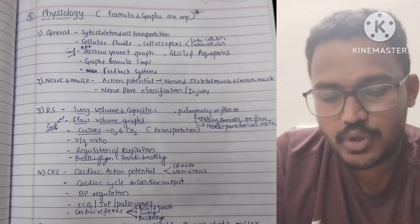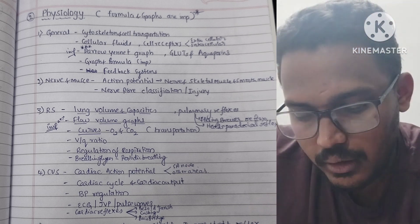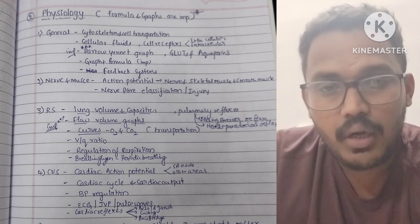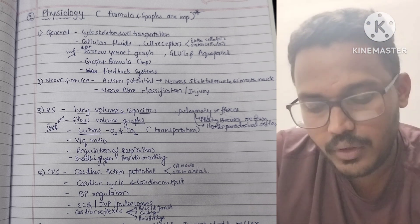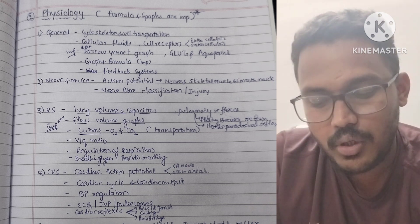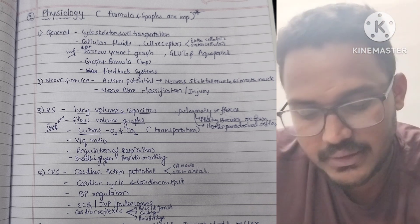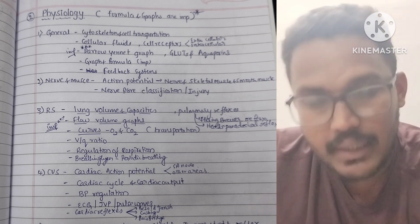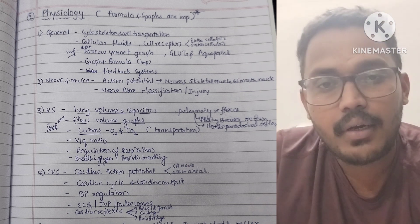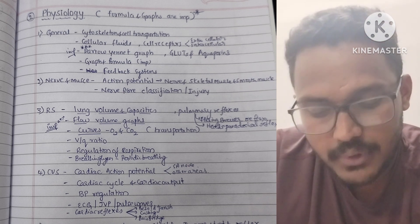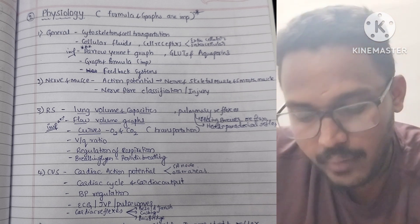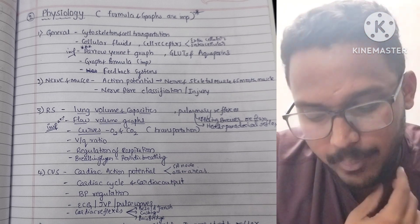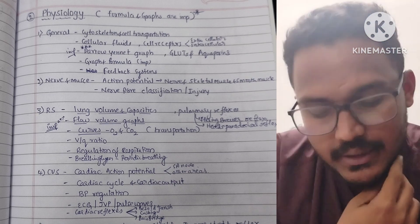Coming to physiology — in physiology, formulas and graphs are more important. From general physiology: cytoskeleton, transportation of the cell, cellular fluids, and cellular receptors are key. Graphs related to aquaporins are very important. Feedback systems, formulas, and graphs related to general physiology are very important.